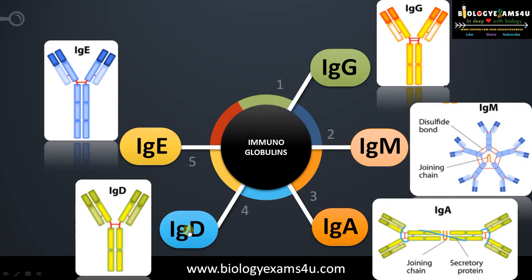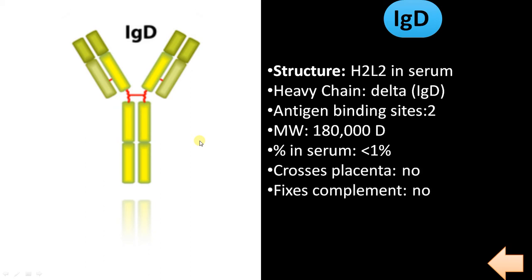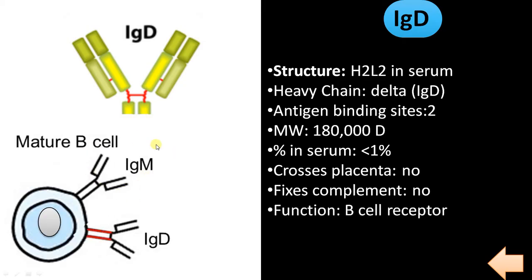The next one is IgD. The structure is H2L2—two heavy chains and two light chains joined by disulfide bonds. The heavy chain is delta. It has two antigen binding sites. Molecular weight is approximately 180,000 dalton. Less than 1% in serum. It cannot cross placenta and cannot fix complement. It functions as a B cell receptor. Like monomeric units of IgM, IgD can function as B cell receptor. Other effector mechanisms of IgD are not known.